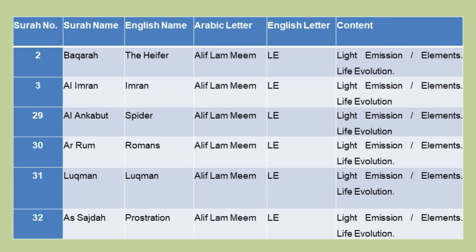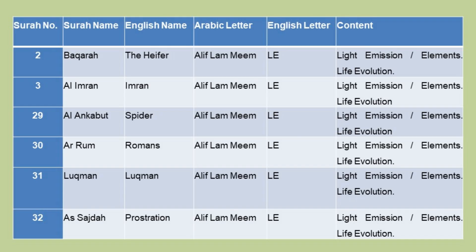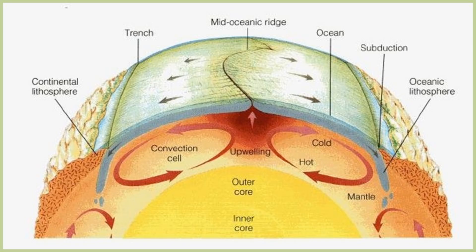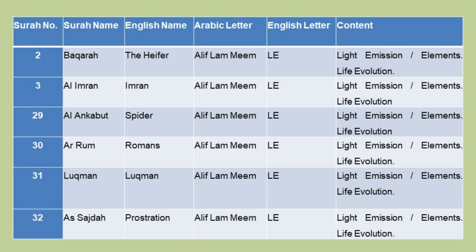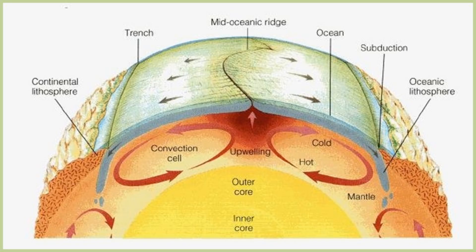Chapter 30 — Alif Lam Mim — LE — Light Emission, Life Evolution. This chapter is about the elements, parent and daughter isotopes, rising mantle plumes, and movement of tectonic plates. Chapter 32 — Alif Lam Mim — LE — Light Emission, Life Evolution. This chapter is about the evolution of the earth and its layers, subduction, and obduction.